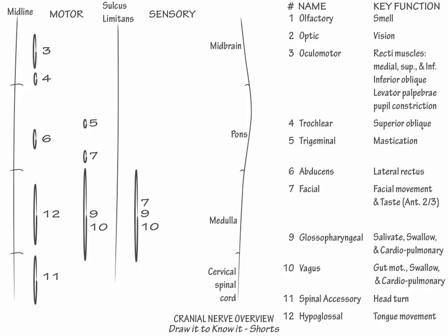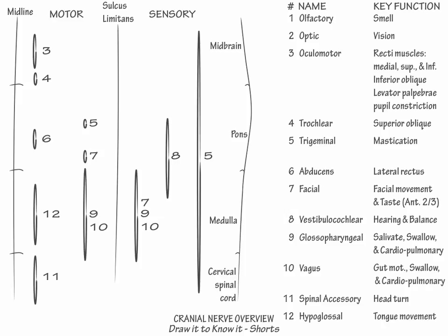Now, spanning from the pons into the medulla, draw cranial nerve 8, the vestibulocochlear nerve, which provides hearing and balance. Then laterally, spanning from the midbrain to the upper cervical cord, show the sensory portion of cranial nerve 5, and a small subdivision of the sensory portions of cranial nerves 7, 9, and 10 inferiorly. The cranial nerve 5 component provides facial sensation. Additional details of these cranial nerve functions are available elsewhere. This concludes our diagram.